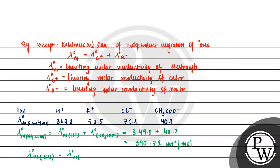If we calculate the limiting molar conductivity of KCl, that equals the limiting molar conductivity of K⁺ plus the limiting molar conductivity of Cl⁻, so 73.5 plus 76.3, which gives 149.8 S·cm² per mole. We can see that the limiting molar conductivity of CH3COOH is greater than the limiting molar conductivity of KCl.